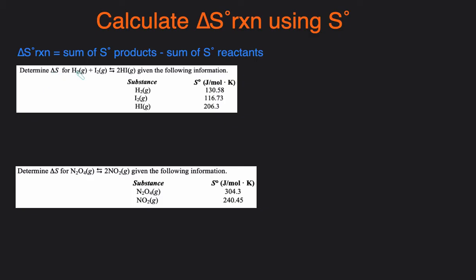We have to calculate the delta S of this reaction given the following information. To use this equation, you have to be given the standard entropy of the reactants and products. Without it, you can't do it, because typically you're not expected to memorize these values.